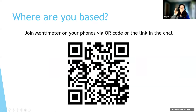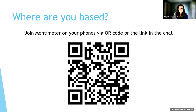There is a QR code on the screen. If you've got a smartphone next to you, do jump and use that to open up the Mentimeter — it's going to ask you whereabouts you're based and ask you to pop a pin on the screen to let us know whereabouts you are. If that function is just not available to you, please jump into the chat box to let us know whereabouts in the world or the country that you are, because it's really nice to know who we have got in the room with us.